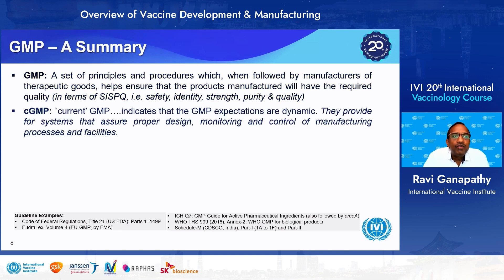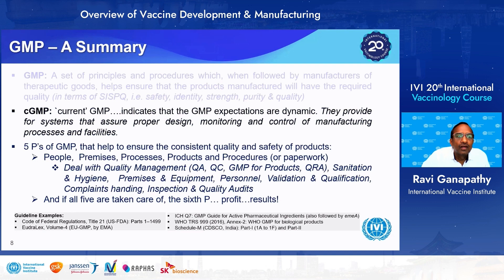GMP — Good Manufacturing Practice — is the manufacturing principle followed to produce all vaccines. It is a set of principles and procedures which, when followed by manufacturers, helps ensure that products have the required quality in terms of safety, identity, strength, purity, and quality. The 'C' in CGMP indicates that GMP expectations are dynamic, providing systems that assure proper design, monitoring, and control of manufacturing processes and facilities. The five P's of GMP are: people, premises, processes, products, and procedures — when all five are taken care of, the sixth P — profit — results.